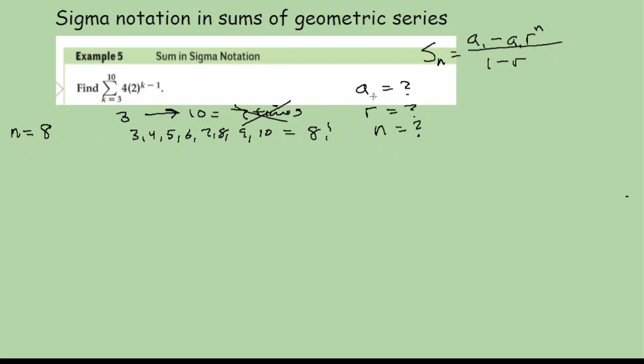Now your first term you find simply by plugging this in to the formula. So I'm going to go four times two to the three minus one, because that is the first one. We're going from three to 10. So this gives me four times two squared, which is four times four, which is 16. So my A1 is 16.